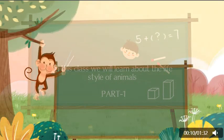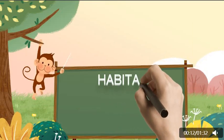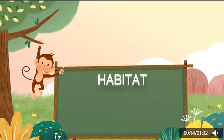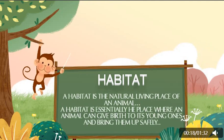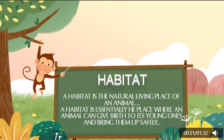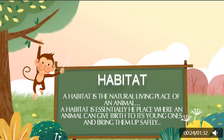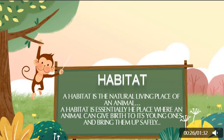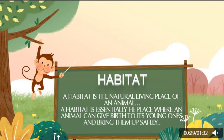Part 1: Habitat. A habitat is the natural living place of an animal. A habitat is essentially the place where an animal can give birth to its young ones and bring them up safely.